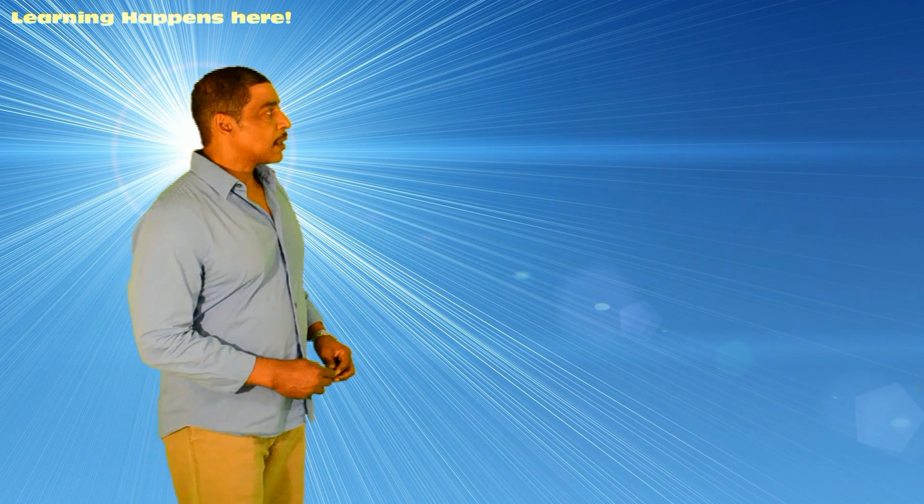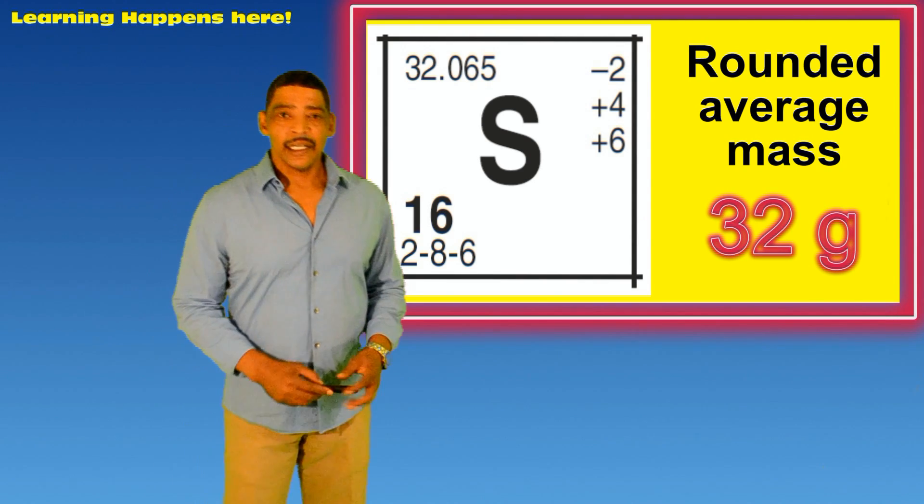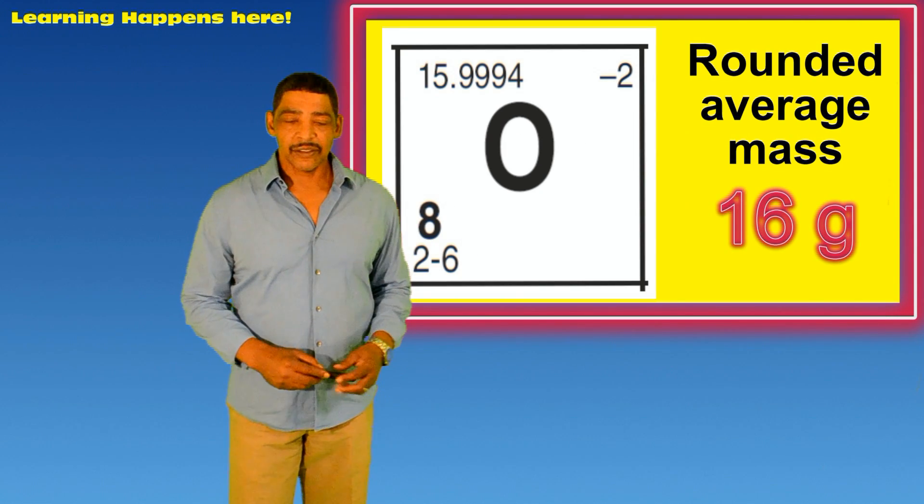So for the element aluminum, we may write 27 grams, and for sulfur, 32 grams, and of course oxygen is 16 grams.